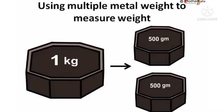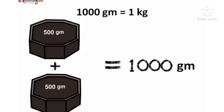Using multiple weights to measure weight means we can use multiple weights. Two 500 grams when we add, it is equal to 1000 grams. As I said to you before, 1000 grams is equal to 1 kg. So, the vendor used two 500 gram metal weights instead of 1 kg weight. Understood, children?